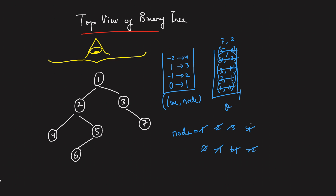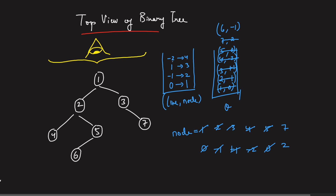Next, take node 5 with line 0. Important: line 0 already has node 1 as the first seen node, so node 5 is not stored in the map. Node 5's left child is 6, so push 6 with line minus 1. Next, take node 7 with line 2. Line 2 is not in the map, so store node 7 — first visit. Node 7 has no children. Finally, take node 6 with line minus 1. Line minus 1 is already in the map, so node 6 is not stored. Node 6 has no children.